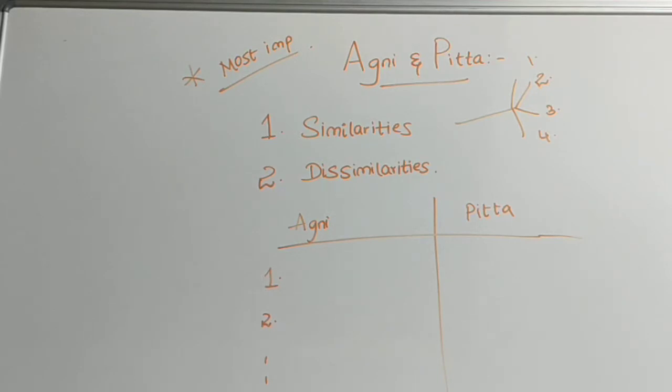Agni and pitta similarities. You all will know, agni is the one which is devoid of any dravatva. There will be no dravatva present in this agni. And pitta, in the gunas of pitta, you will go through, dravaguna will be there in the pitta guna. First, the similarity is, agni is devoid of dravatva. Pitta consists of dravaguna.